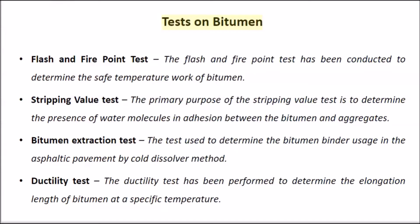Tests on Bitumen. Flash and Fire Point Test: Conducted to determine the safe working temperature of bitumen. Stripping Value Test: Determines the presence of water molecules in the adhesion between bitumen and aggregates. Bitumen Extraction Test: Determines the bitumen binder usage in asphaltic pavement by the cold dissolving method. Ductility Test: Performed to determine the elongation length of bitumen at a specific temperature.